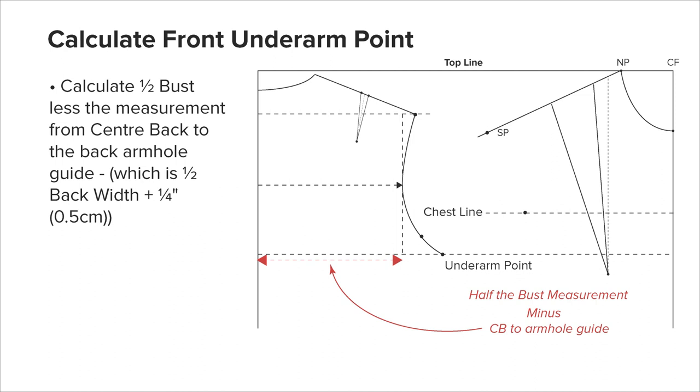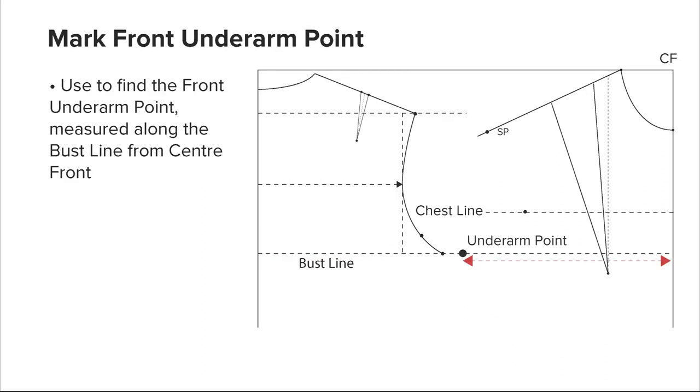The front underarm point: to find the front underarm point, we use center back to back armhole guide measurement taken from the back bodice draft, which was calculated as a half back width plus a quarter of an inch or 0.5 centimeters. So half bust minus center back to back armhole guide gives us the distance from center front to the front underarm point. Mark the front underarm point. This will give you 4 inches or 10 centimeters for bust ease overall. This will increase to 5 inches or 13 centimeters for extra large and can be a little less in extra small sizes. Sleeveless garments may require less ease.